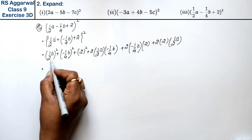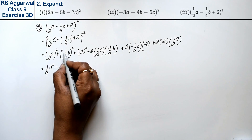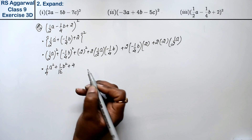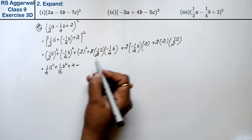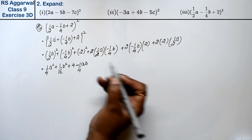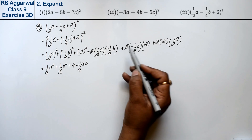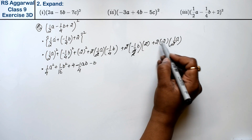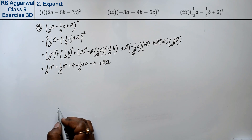So how much is this? 1 upon 4 A square, plus 1 upon 16 B square, plus 4. Then 2 times 1/2 A times minus 1/4 B — the 2 cancels — giving minus 1/4 AB. Then 2 times minus 1/4 B times 2 — cancelling — gives minus B. And 2 times 2 times 1/2 A — cancelling — gives plus 2A. So the final answer is: 1/4 A² + 1/16 B² + 4 − 1/4 AB − B + 2A.